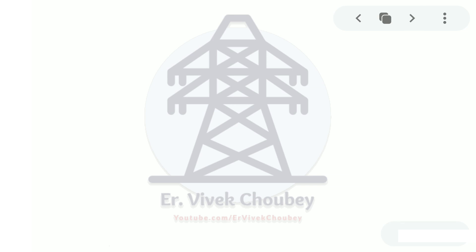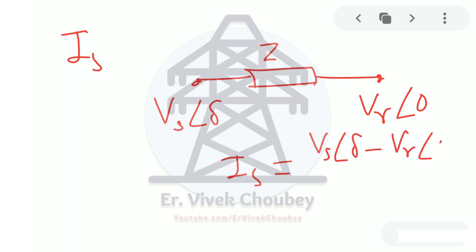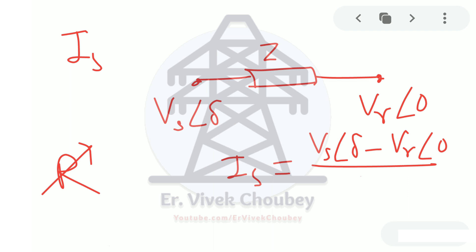First we will find out the current Is sent from the sending end side on the transmission line. For a transmission line with line impedance Z, sending end voltage Vs∠δ and receiving end voltage Vr∠0, the current Is equals (Vs∠δ − Vr∠0) / Z. Here Z is R + jωL, but the effect of resistance is normally neglected. So the only factor we take is jXL, the line reactance.